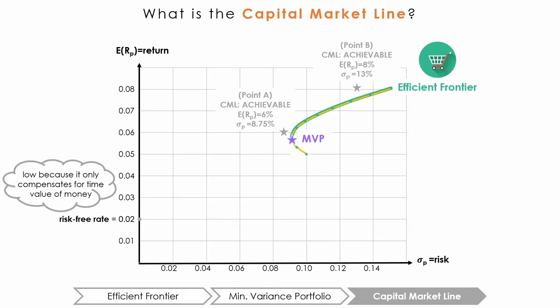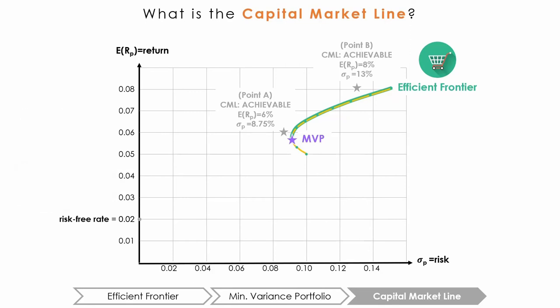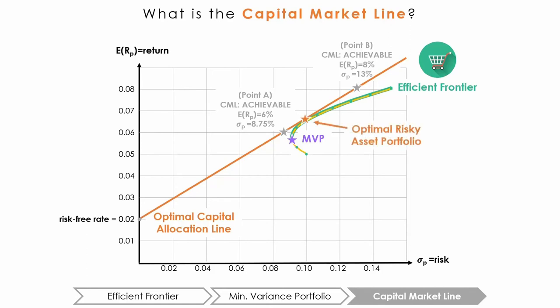Risk-free assets, such as short-term government bonds, have returns that are almost entirely guaranteed. For example, the government of Canada has not yet ever failed to repay investors on its government bonds. Thus, with such a safe and reliable asset, investors do not need to be compensated for any additional risk, like default risk. We start at 2%, the risk-free rate, and draw a line that is tangent to the efficient frontier. This is the optimal capital allocation line. The point tangent to the efficient frontier is called the optimal risky asset portfolio — the point on the efficient frontier at the highest slope, which maximizes the amount of return for every unit of risk taken.